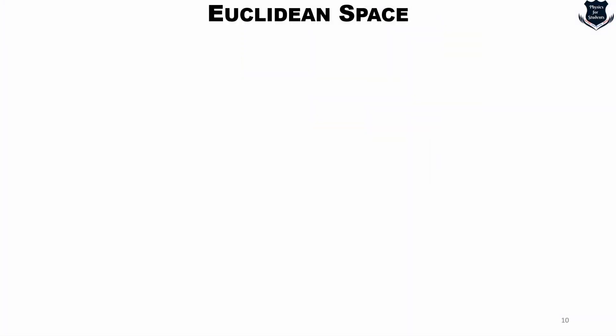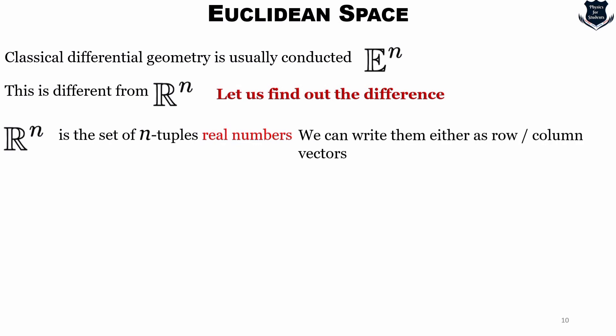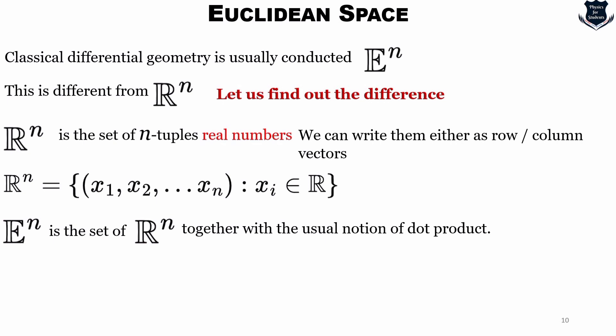Now we will move to the next part of our video where we start with the very elementary Euclidean space. So the Euclidean space, the classical differential geometry is usually denoted and conducted on Euclidean space E^n. However, it is important for us to distinguish from R^n. So what we can say that R^n is a set of n-tuples of real numbers. These can be written either as row or column vectors, up to your choice, and we can write it as something like this. So R^n equals x₁, x₂ goes up to xₙ where xᵢ which are the numerals are a set of a family of the member of R.